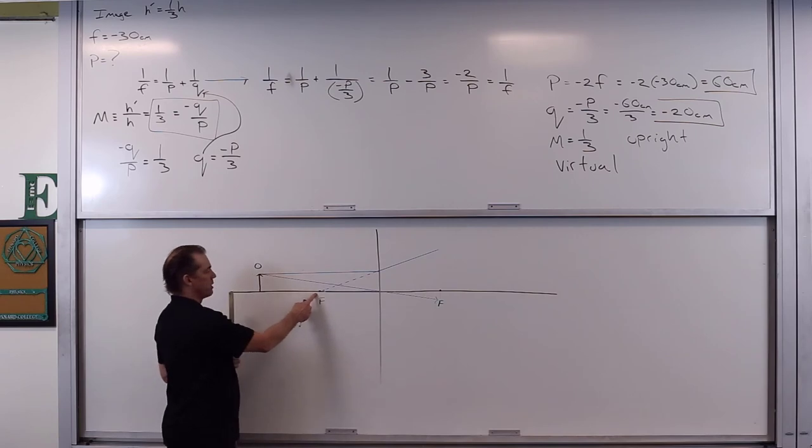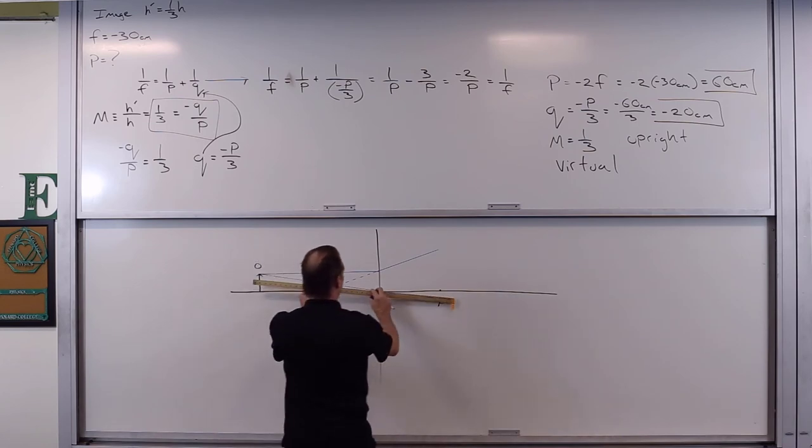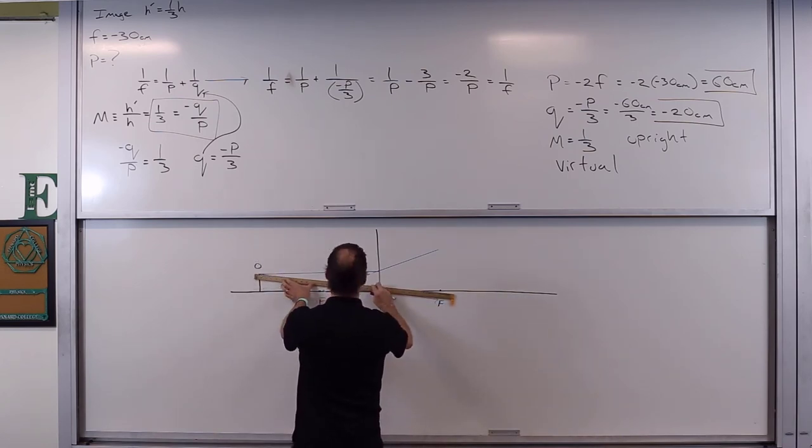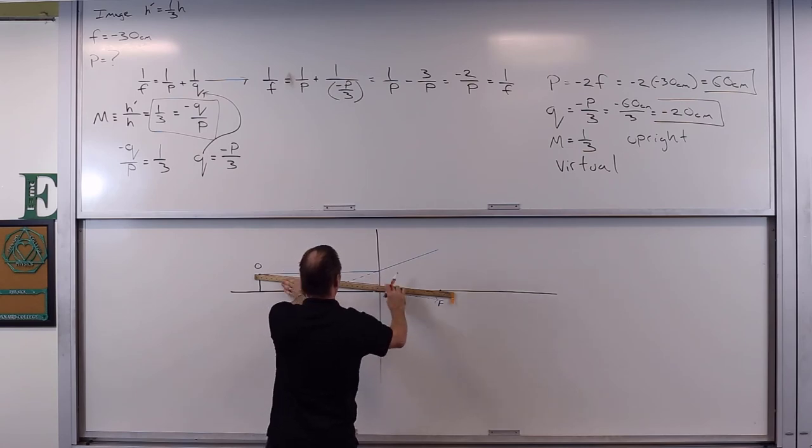So we've already used this focal point here. Don't want to use it again. We haven't used this one. So that's our other focal point. So we kind of put this up like this. And notice that this one's on the other side of the lens. So this ray is going to go like it's aligned with it.